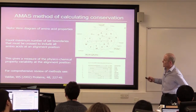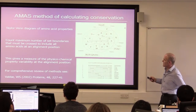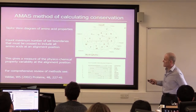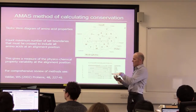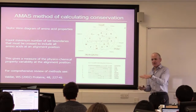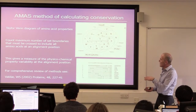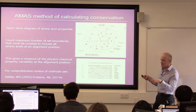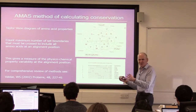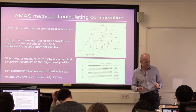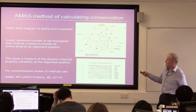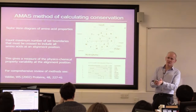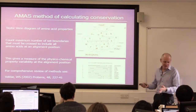What it effectively does is: if I have a set of amino acids at a column, if I have a set of different amino acids in a position in a column, how many set boundaries do I have to cross to group them all together? That's conceptually what it does. So if you have to cross a lot of set boundaries, then that's low conservation. If you don't have to cross very many, then it means it's highly conserved.